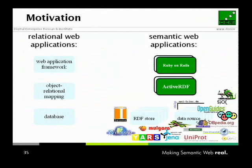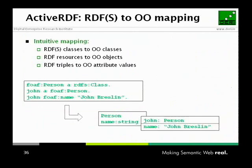If you're a Python programmer, you'd need to do something similar to what I did for ActiveRDF — but it's very small, very simple, and once you figure out how to do it, it's not so difficult. Intuitively, the mapping from RDF and RDFS data to OO works like this: RDF schema defines classes, which we map to OO classes; RDF has resources, which we map to OO objects; and RDF has triples that make statements about resources, which we map to OO attribute values and relationships.